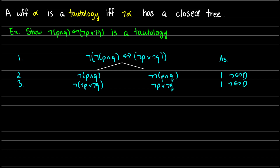I'll go to line 4 and get rid of the double negation on 'not-not-p and q' on the right, using double negation to be left with 'p and q' — that comes from line 2, double negation. Since I have 'p and q', let's get rid of the and, so we know we get p and we get q. That'll be line 5 and 6, from line 4, and-decomposition.